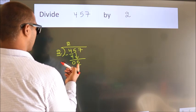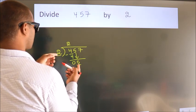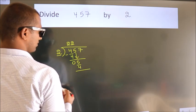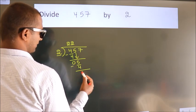A number close to 5 in 2 table is 2 2s, 4. Now, we subtract. We get 1.